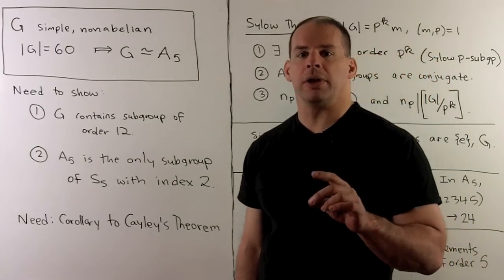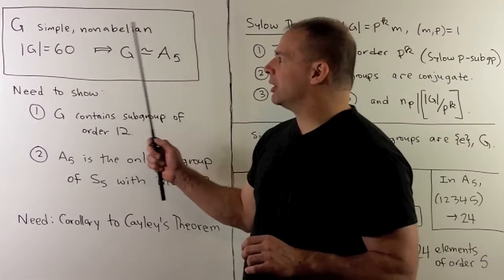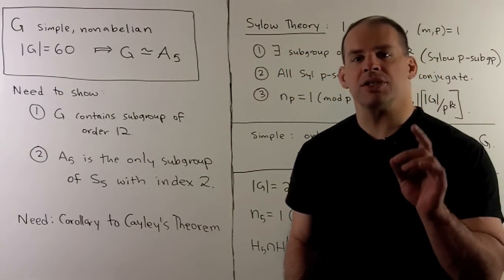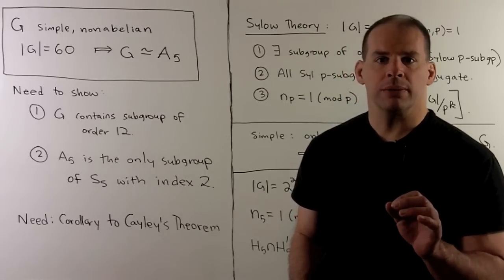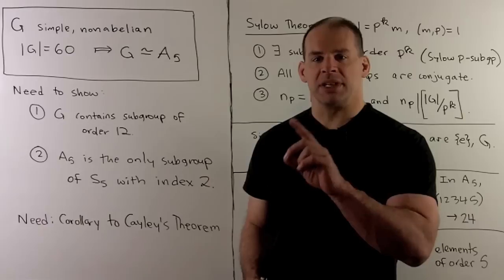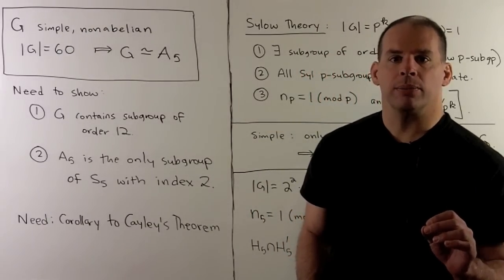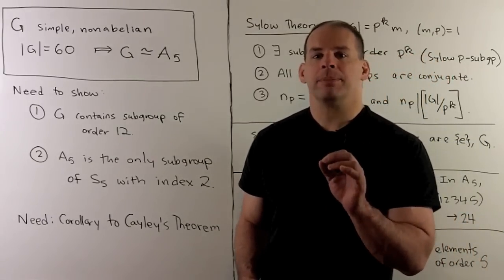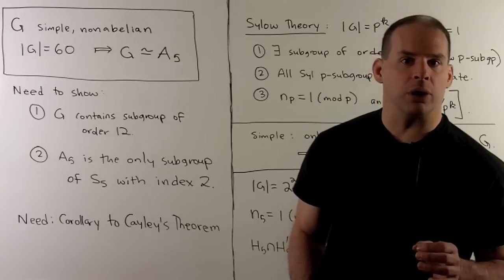As another application of Sylow theory, we show that if G is a simple non-abelian group with 60 elements, then G is isomorphic to A5, the alternating group on five letters. So that means if we have a simple non-abelian group with 60 elements, there's only one isomorphism class. We'll also show that A5 is isomorphic to the symmetry group of rigid motions of a regular icosahedron.